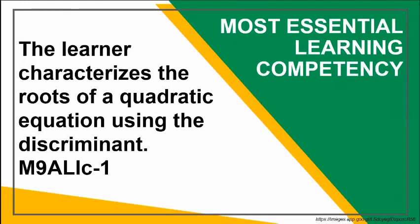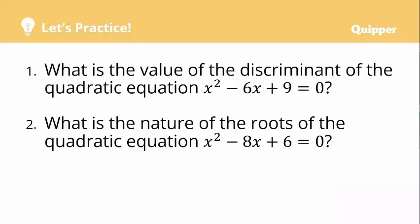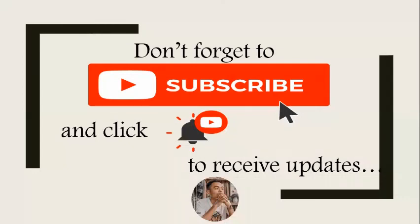Let's go back to our most essential learning competency: the learner characterizes the roots of a quadratic equation using the discriminant. I hope that with the examples and the discussion, you were able to achieve this target. For practice: what is the value of the discriminant of x squared minus 6x plus 9 equals 0? And what is the nature of the roots of x squared minus 8x plus 6 equals 0? Please use the comment section for your answers. Thank you and happy learning. Don't forget to subscribe and click the notification button. This is SirRP.